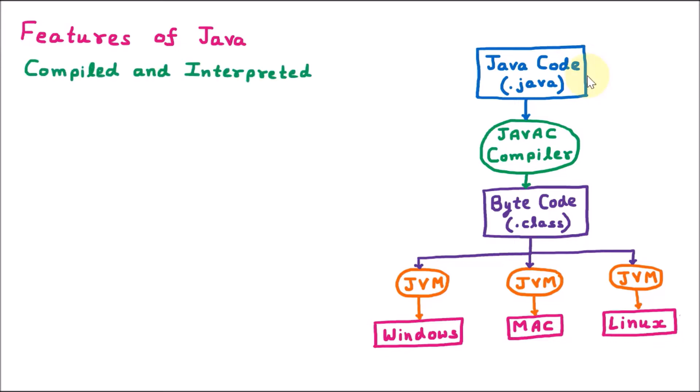We are understanding this with the help of a diagram. Let us suppose that we are creating a Java file, say ankit.java. Inside that file, we are writing certain code — some lines. So this is called source code, also called Java code. First of all, we are having the compilation phase, where we have the Java compiler. It converts the source code or source file to the byte code, which is the .class file.